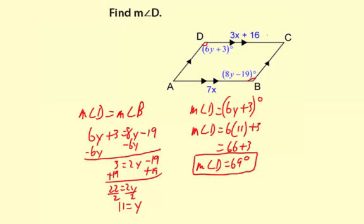Okay, let's review the process. We have a parallelogram, so we use the relationship that opposite angles are congruent. Then we wrote an equation, solve for y, and then use the y value to figure out the value of 6y plus 3, which turned out to be 69 degrees.